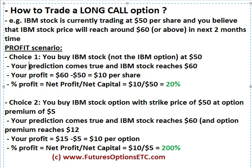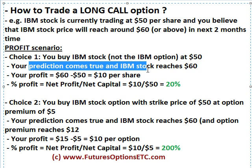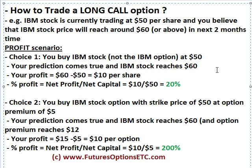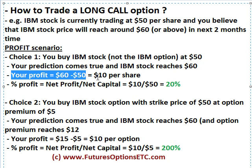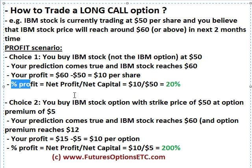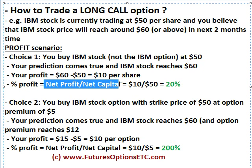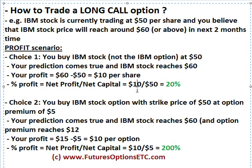Assume that your prediction comes true and IBM stock price reaches $60. Your profit comes to $10 per share. In terms of percentage, your profit is net profit divided by net capital — that would be $10 divided by $50, taking it to 20% profit.